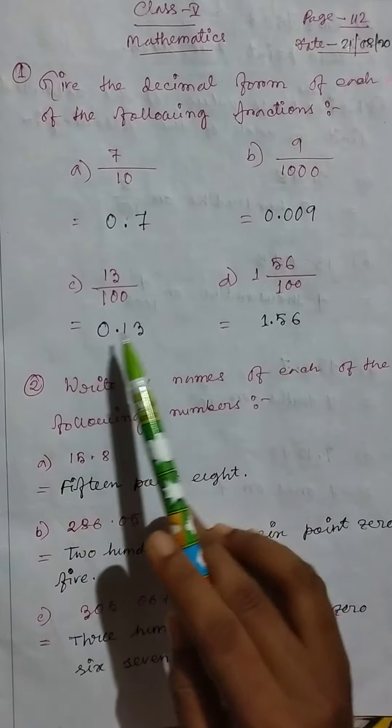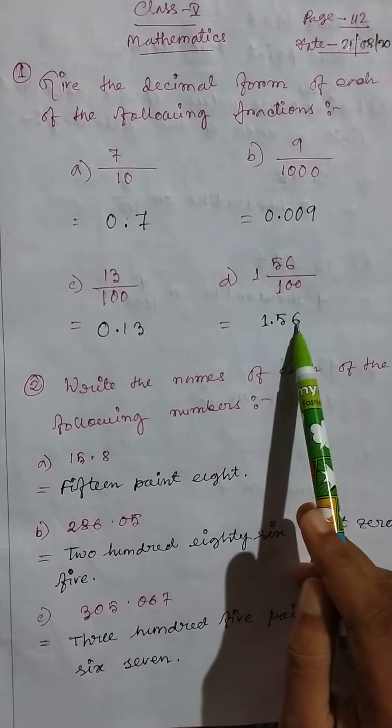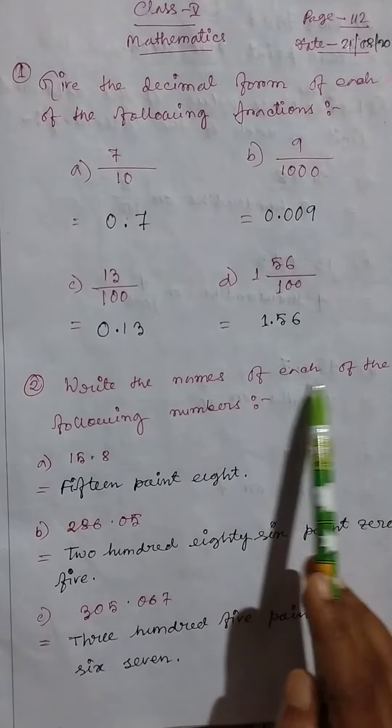13 by 100 equals 0.13, then 1 56 by 100, so 1.56. Then question 2: Write the names of each of the following numbers.